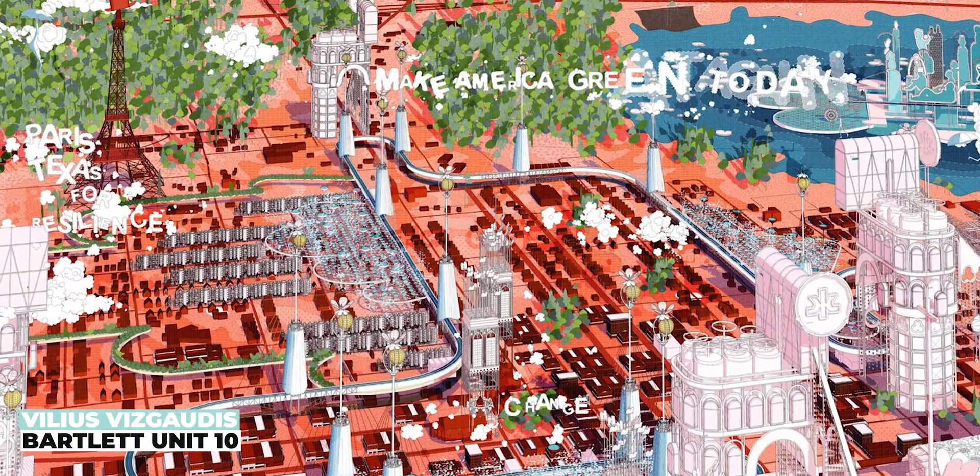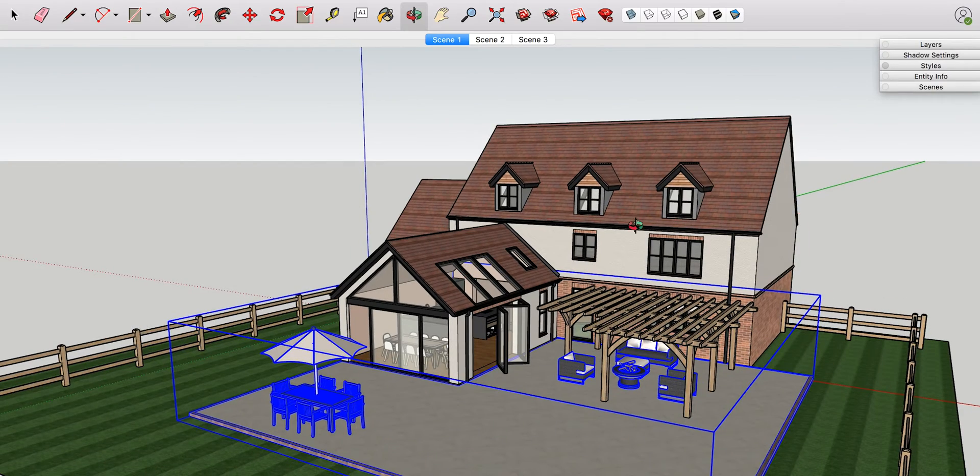This is a hybrid approach — semi-realistic imagery that still has that semi line-drawing, hand-drawn style. I'm going to break it down and show you how I exported it straight from SketchUp, brought it into Photoshop, and added all the post-production elements that give it that element of realism. So let's get into the video.